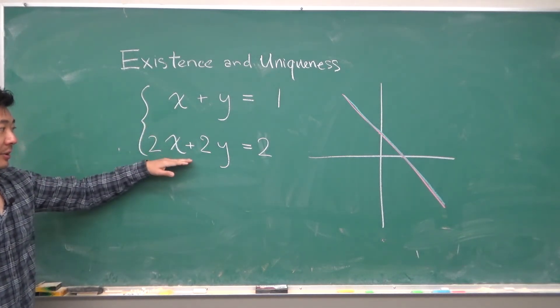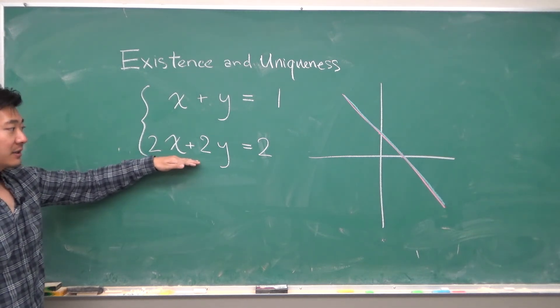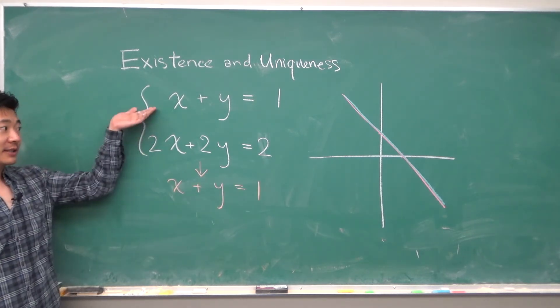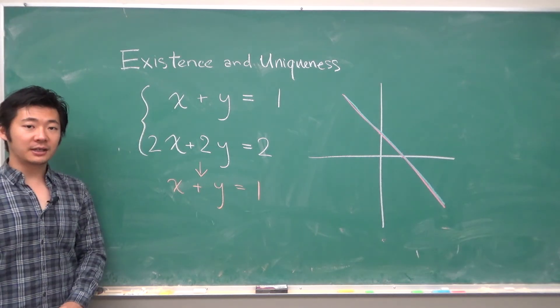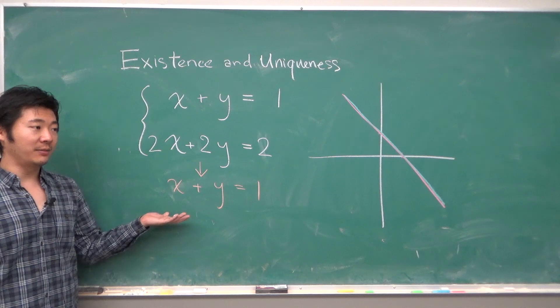In fact, if you look a little bit more carefully, you can divide this equation by 2 and you end up with the same equation as the first equation. So in fact, these were the same equation. And so this is a case where we have infinitely many solutions.